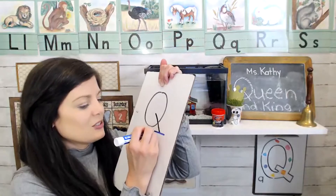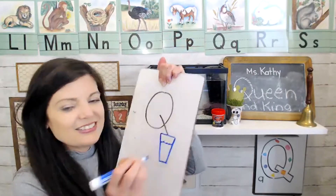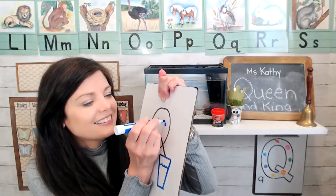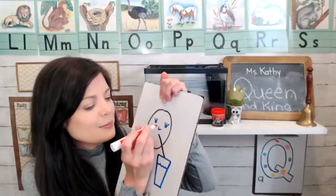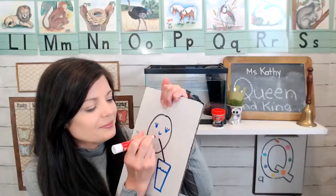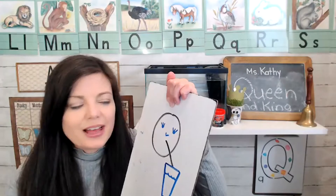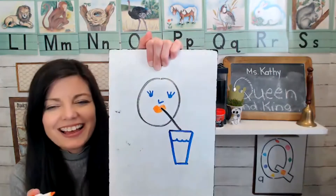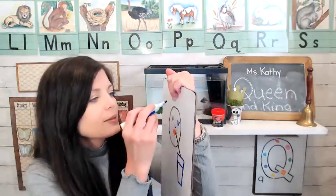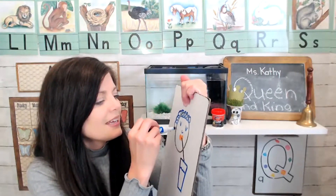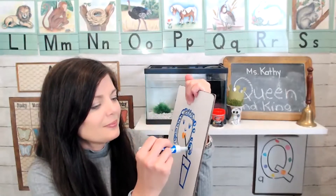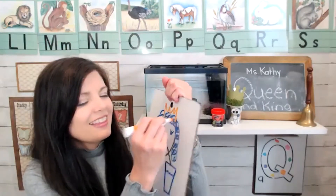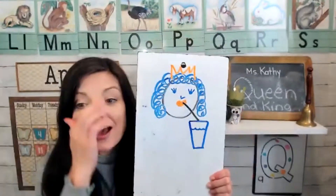The queen is going to drink a glass of milk using her straw. So we're going to give her some eyes, and a nose, and we'll put on some lipstick. She looks pretty cool with that orange lipstick! We're going to add some hair on the queen, and of course she needs a crown if she's the queen, so let's add a crown on the top of her head.